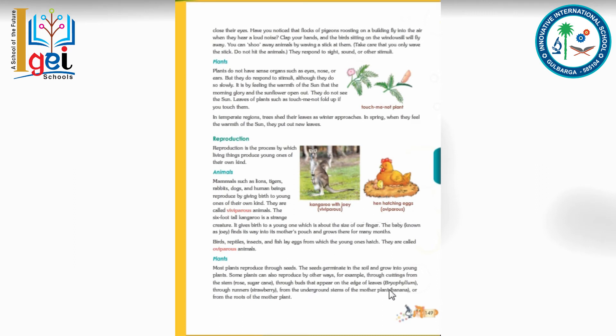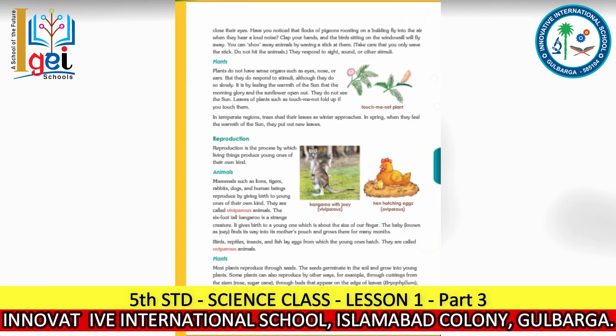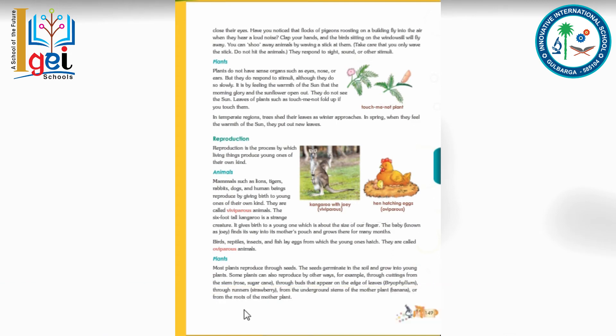Other methods of plant reproduction include through buds that appear on the edge of leaves, through runners, from the underground stem of the mother plant, and from the roots of the mother plant.